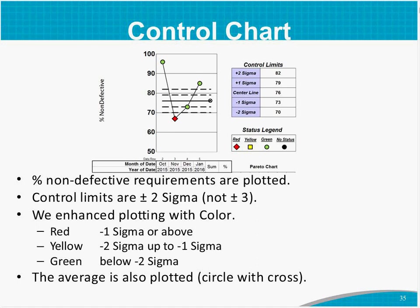Here is the control chart portion of our chart. You can see we're plotting the compliance — or the non-defective items — versus defects, errors, and mishaps — in this case, unmet requirements. As was mentioned, we're using two sigma control limits here. We wanted to color-code the dots because the whole organization understands red, yellow, and green. The different areas are colored according to the sigma level deviation. You can see three green dots and one red one. The average is also plotted — the circle with a cross symbol represents the average of all the data.